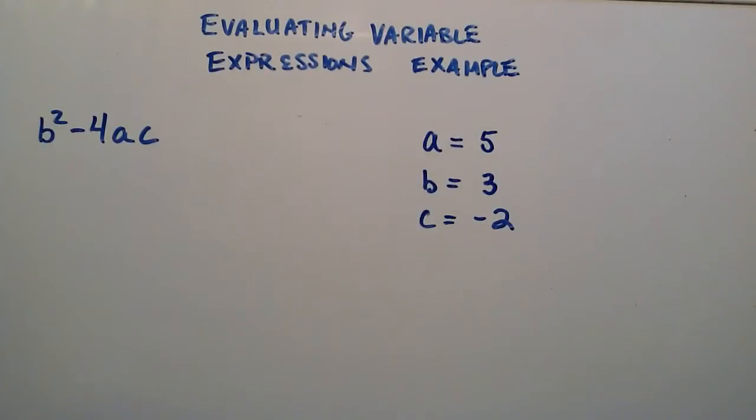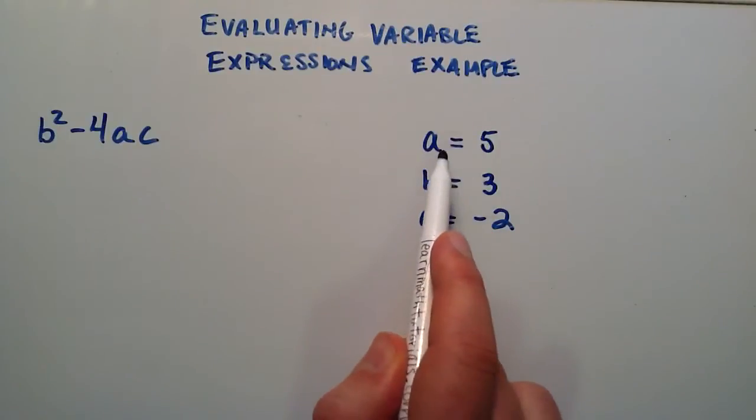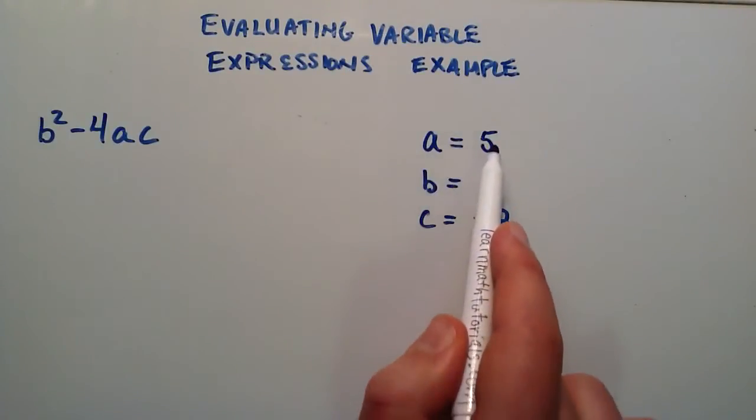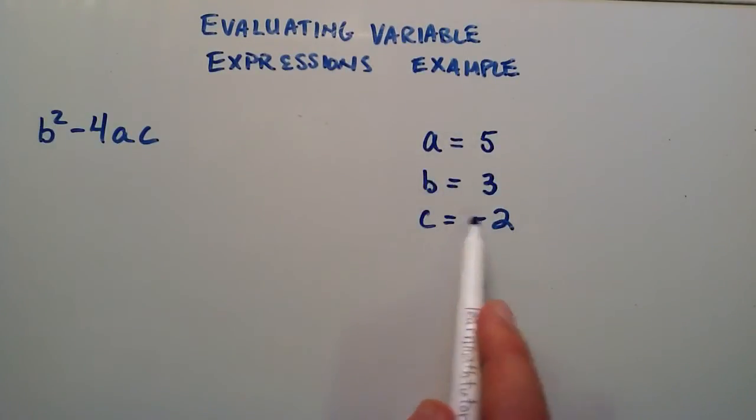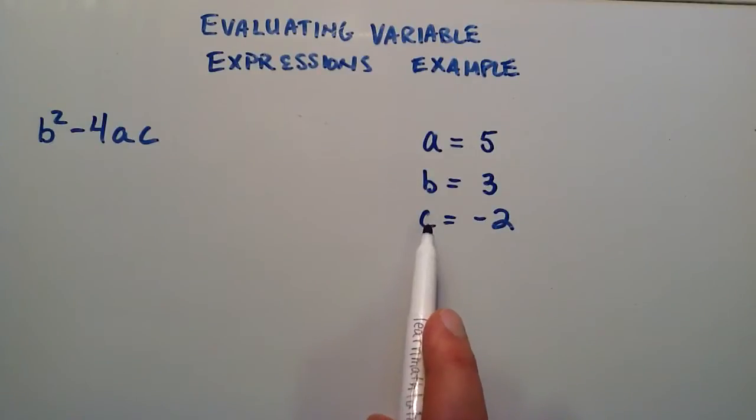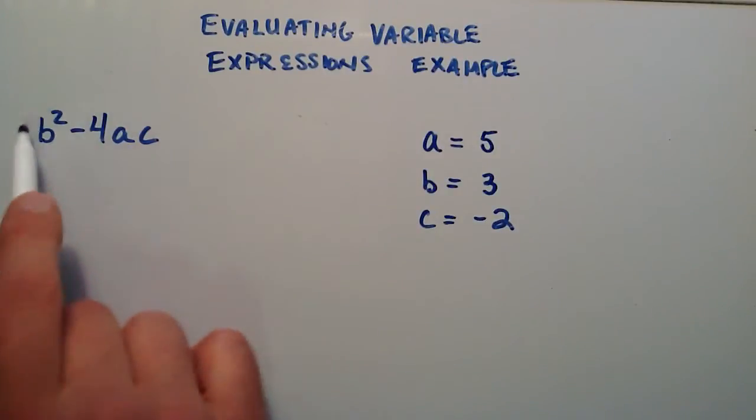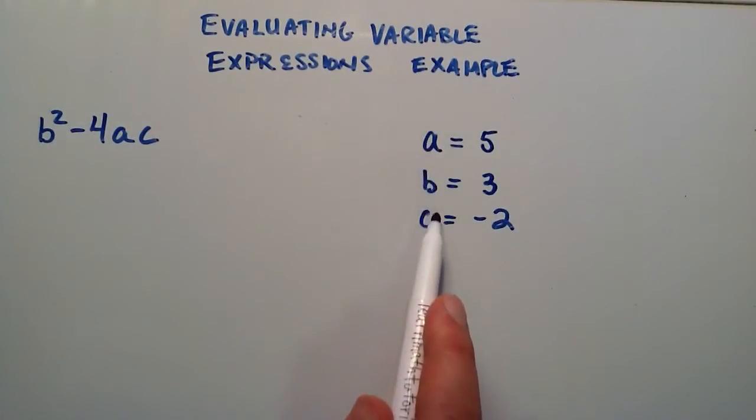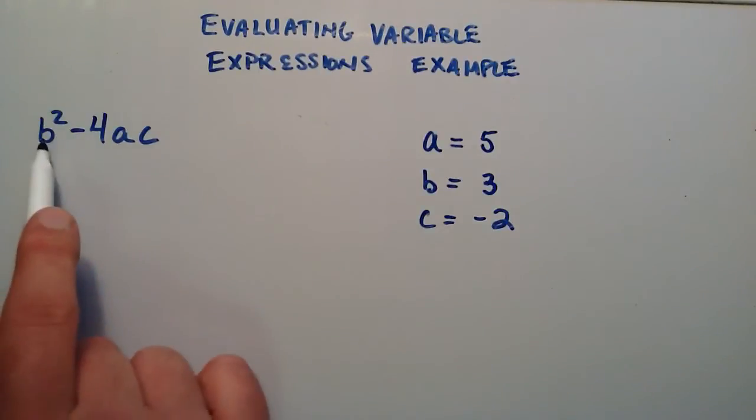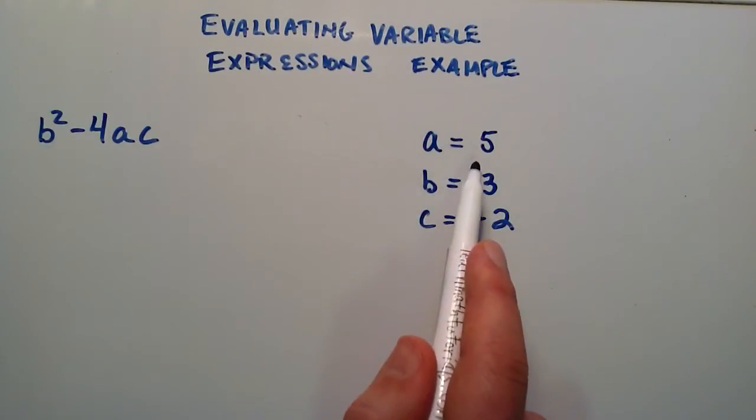So the first type of example I want to give you is how to evaluate a variable expression. Usually with these type of questions we're given some sort of variable expression and then we're given these variables here and we're given values that are associated with each of our variables. So to solve a variable expression like this with given values we simply replace all of our variables with their corresponding values.